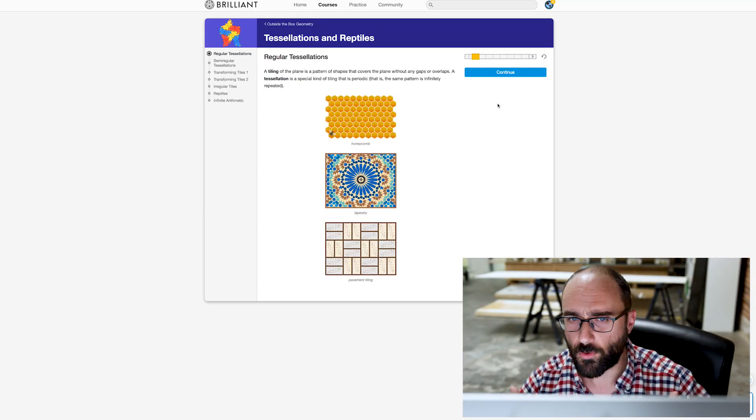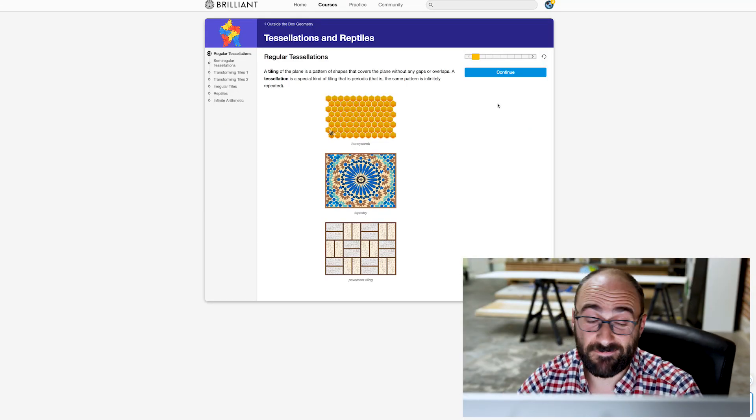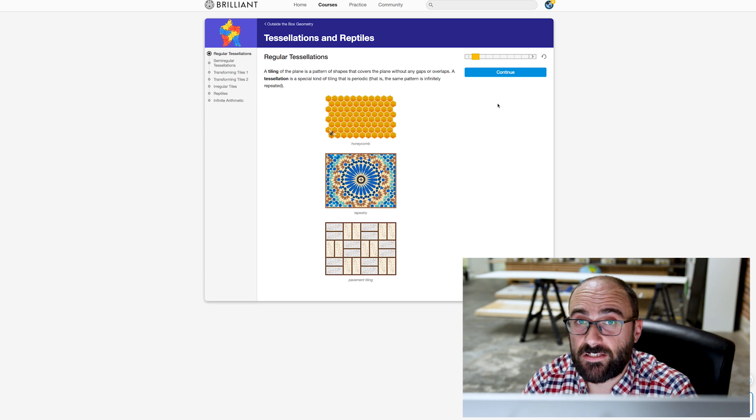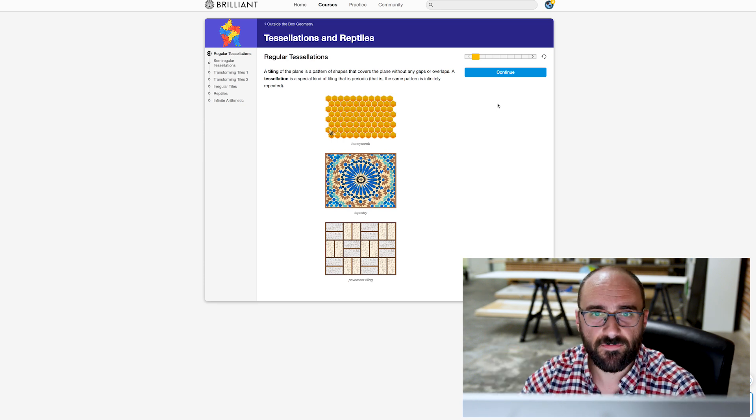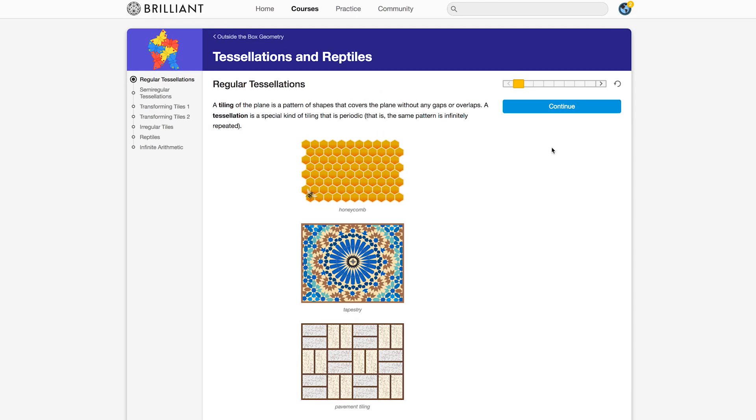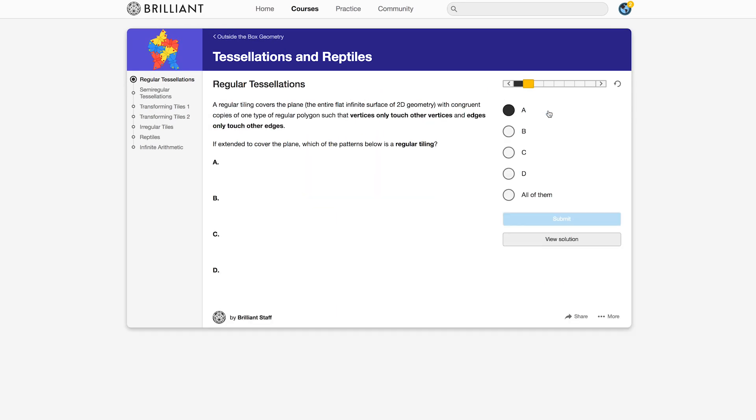Brilliant.org made this episode possible and I love them. They are right in line with what Vsauce stands for. Learning and asking questions. On the site, you can run through courses that quiz you and you might not get them all right. I certainly don't, but by getting questions wrong, I think you learn more. So let's just dive into the tessellations page. You can learn about them. Now here we have a question.